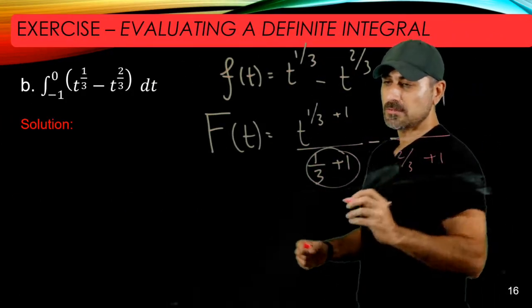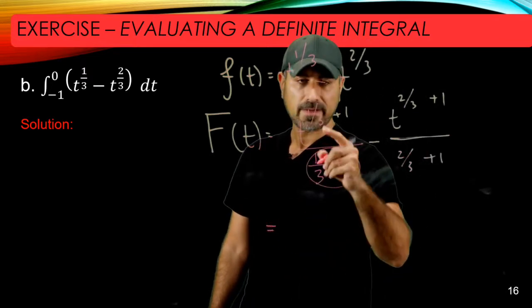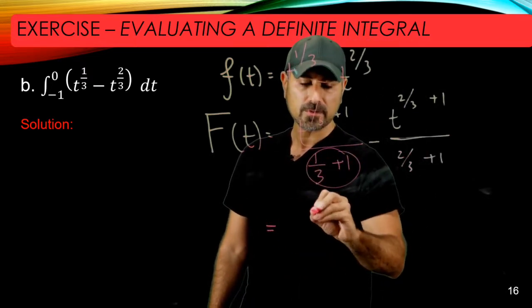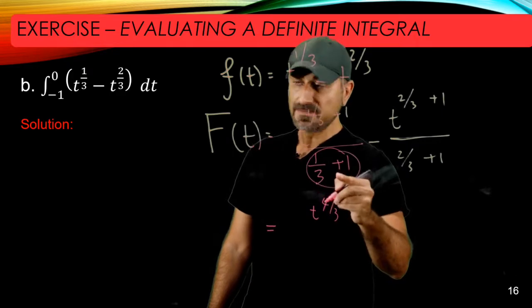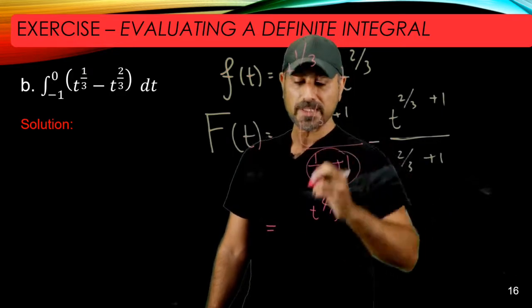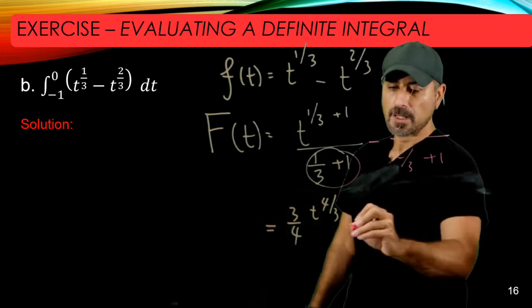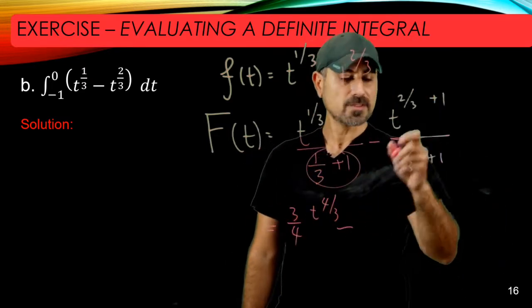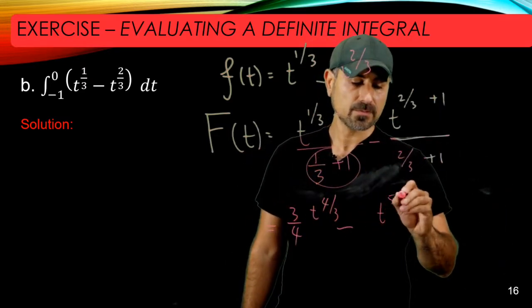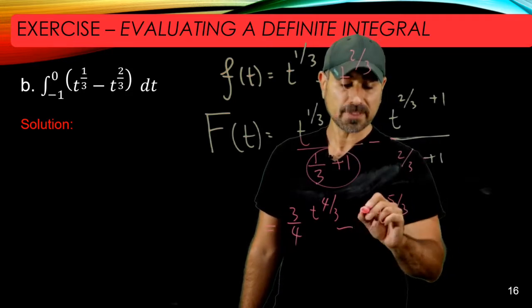We're going to simplify this expression. We have t to the 4/3 divided by 4/3, but we can flip it, so 3/4 t to the 4/3 minus this is t to the 5/3 divided by 5/3. If you flip it, it becomes 3/5.